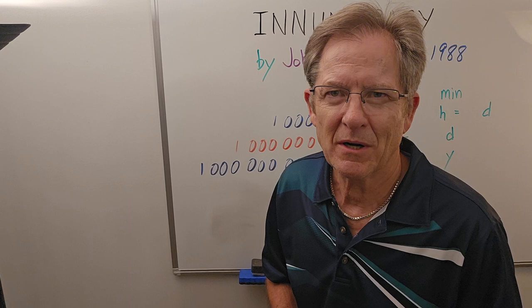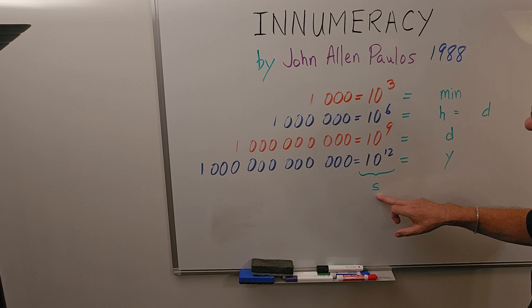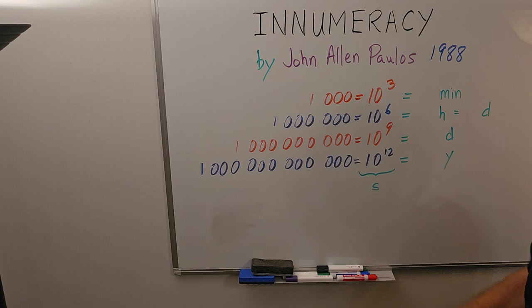But today what I want to talk about is powers of 10: 10 to the 3, 10 to the 6, 10 to the 9, 10 to the 12. I'm going to think of that as being in seconds. So of course if I write these powers of 10 in their long form, those are the numbers you get. The exponent is the number of zeros after the 1.